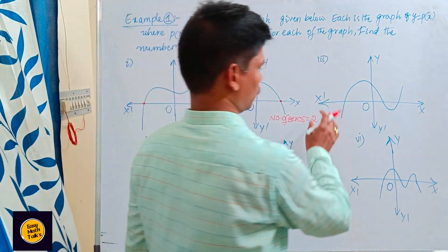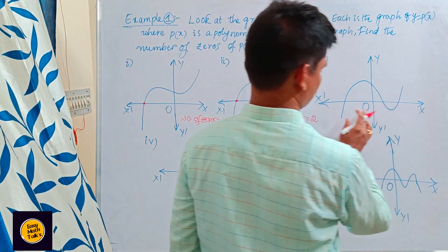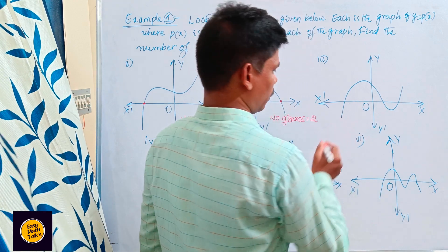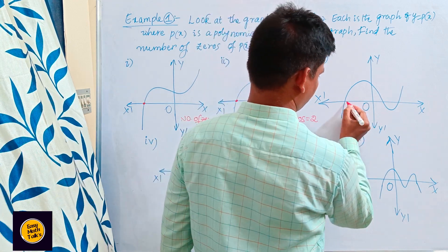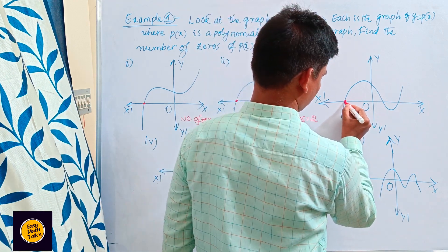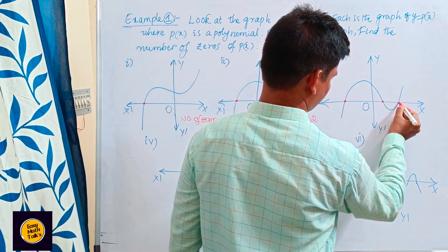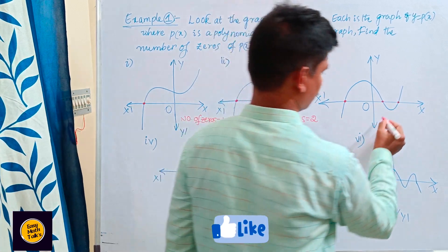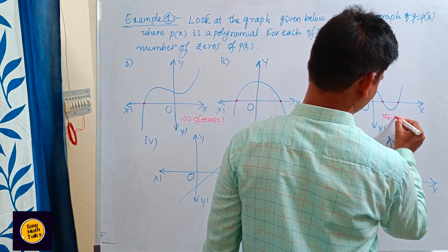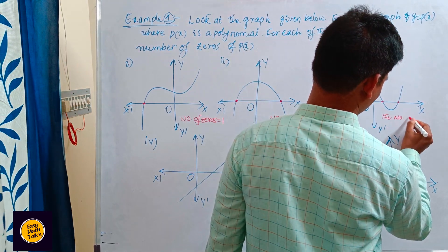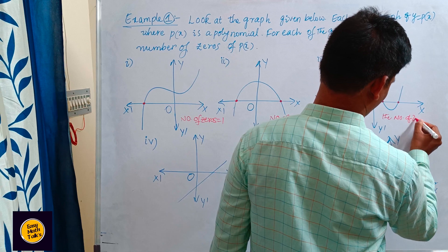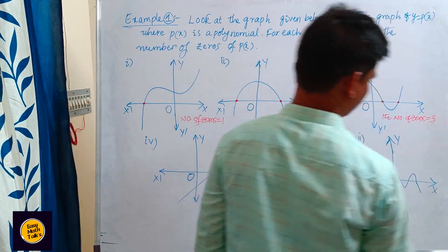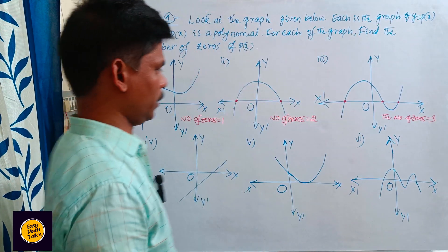See here. On the x-axis, the graph is intersecting at how many points? One, two, three. So the number of zeros is equal to three.